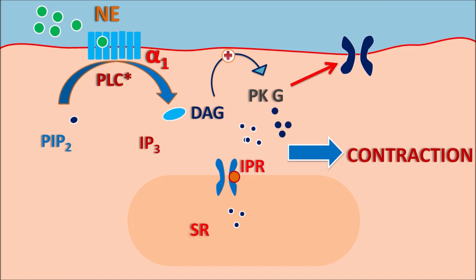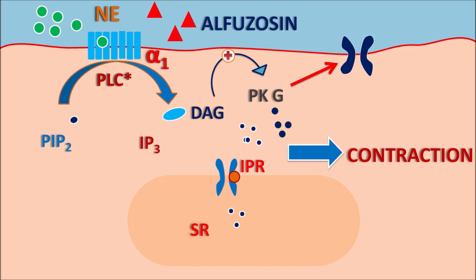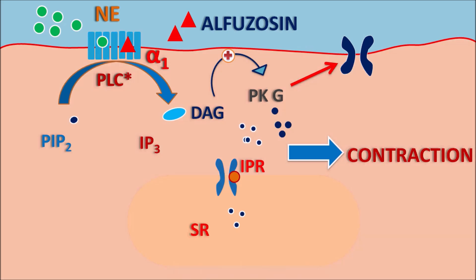Now let us see how Alfuzosin acts. Alfuzosin acts as an antagonist at the alpha-1 receptor — it binds to the alpha-1 receptor, inhibits alpha-1 receptor activity, and prevents contraction of smooth muscle. In this way, Alfuzosin produces bladder relaxation as well as vasodilation.